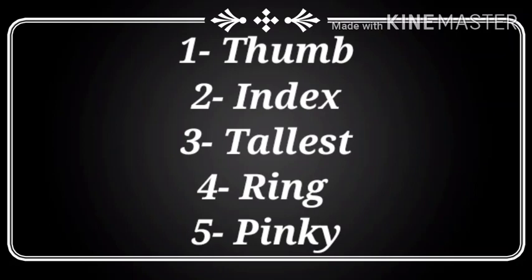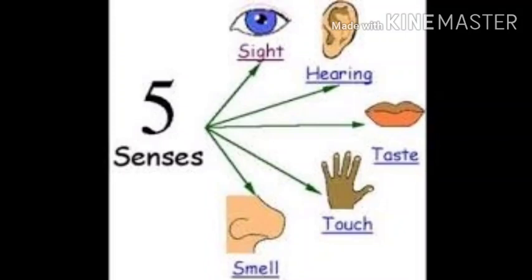Next topic is sense organs. Sense organs tell us about the outside world. हमारे sense organs हमें बाहर की दुनिया के बारे में बताते हैं. We have five sense organs: eyes, nose, ears, tongue, and skin. Our eyes help us to see the things around us. हमारी आँखें हमें चारों तरफ की चीजों को देखने में मदद करती हैं.